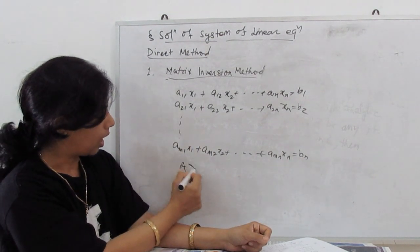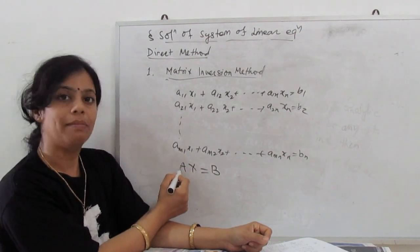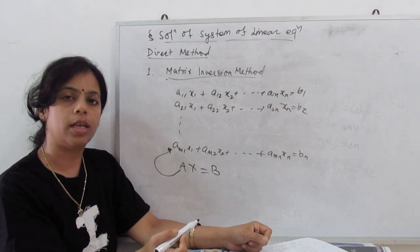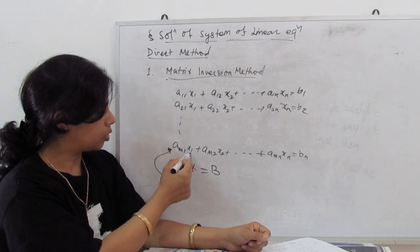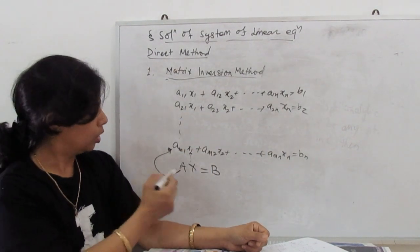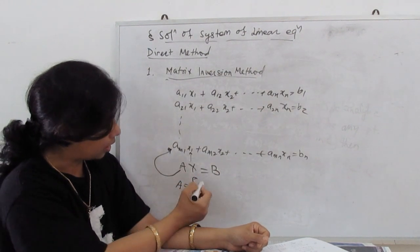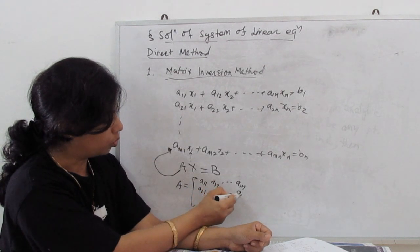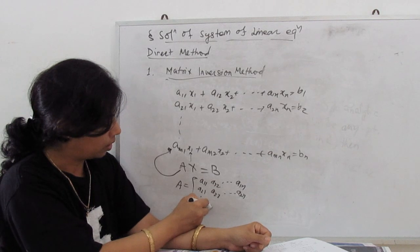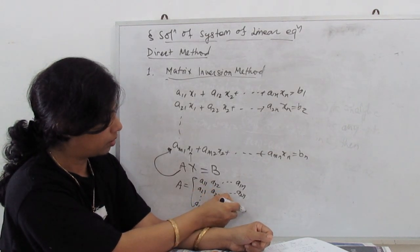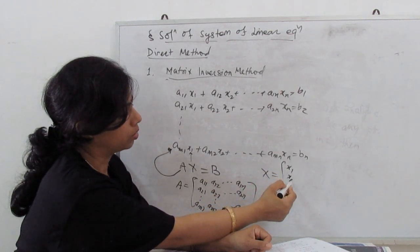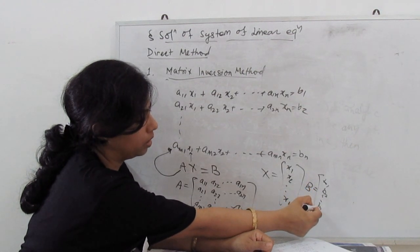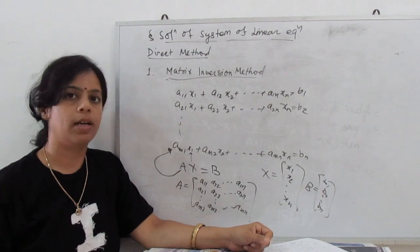The matrix A is arranged as rows [a1,1, a1,2, ... a1,n], [a2,1, a2,2, ... a2,n], up to [am,1, am,2, ... am,n]. Similarly, X is the column matrix of x1, x2, up to xn, and B is the column matrix of b1, b2, up to bn. So this is the matrix arrangement of the given system of linear equations.